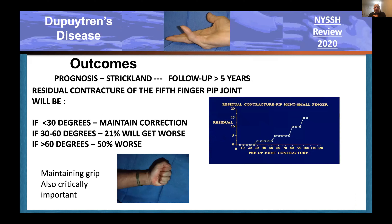Outcomes were studied by Strickland and others. They found that if the initial PIP contracture was less than 30 degrees, correction was often maintained. If it was 30 to 60 degrees, about 20% got better. After 60 degrees, some ended up worse. The assumption that you can release the volar plate and collateral ligaments, do the fasciectomy, and correct the PIP contracture permanently is not correct in many patients.